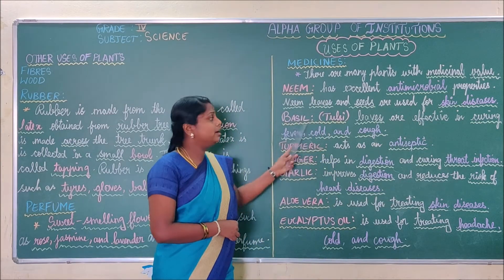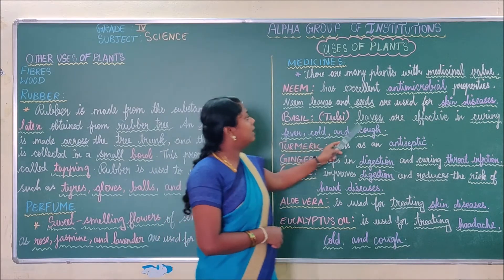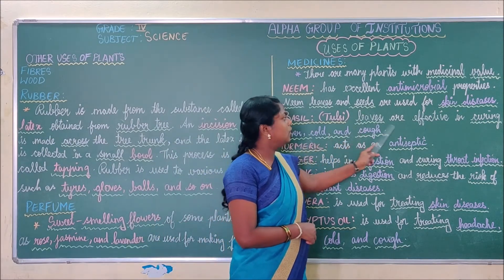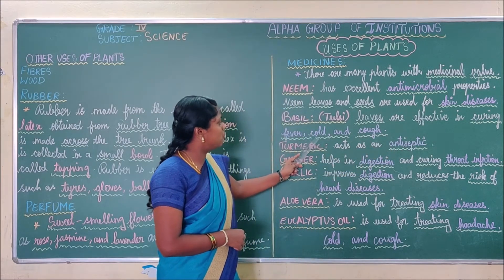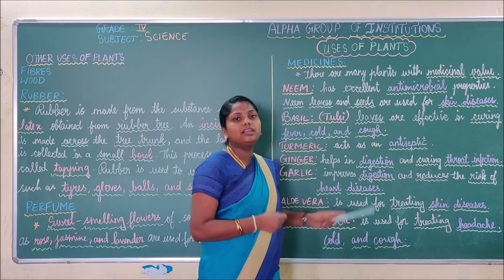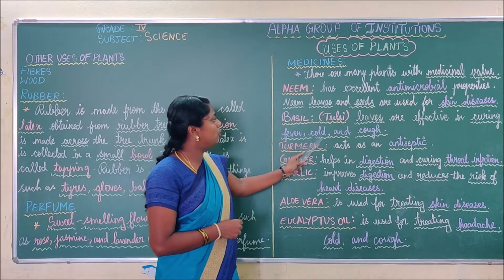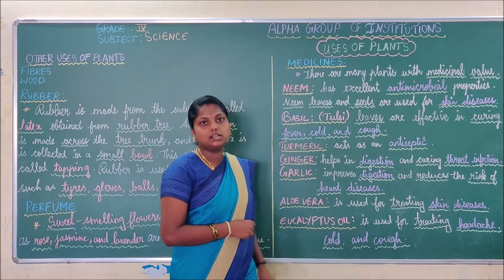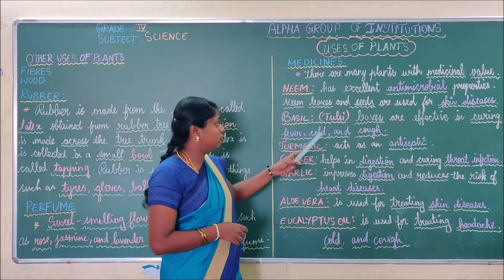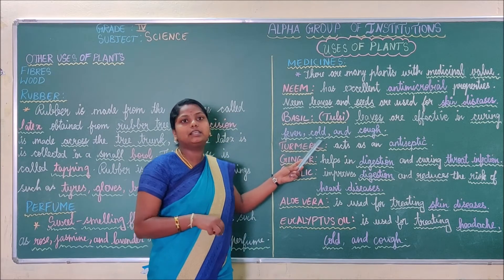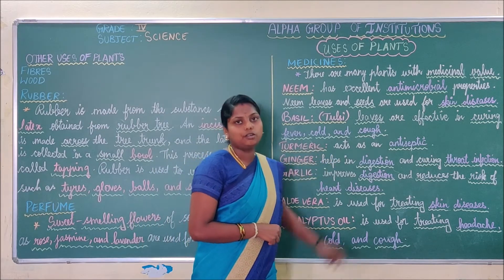The next medicinal plant is basil, known as tulasi in Tamil. Leaves of tulasi are very effective in curing fever, cold, and cough. You can make a liquid from it and drink it to cure fever, cold, and cough.